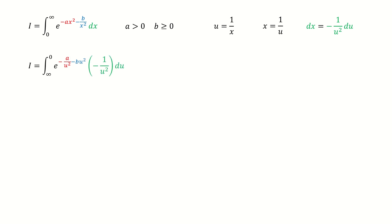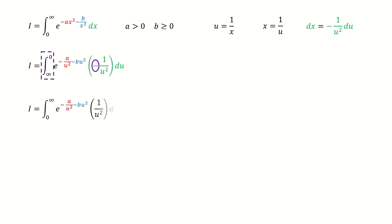After plugging in the substitution, we got here. Note for the lower and upper limit for this integral: after we apply the reciprocal substitution, the lower and upper limit are flipped. But we have this negative sign in front of the 1 over u squared term, so we can use this negative sign to flip the lower and upper limit back. After we flip them back, we got here.